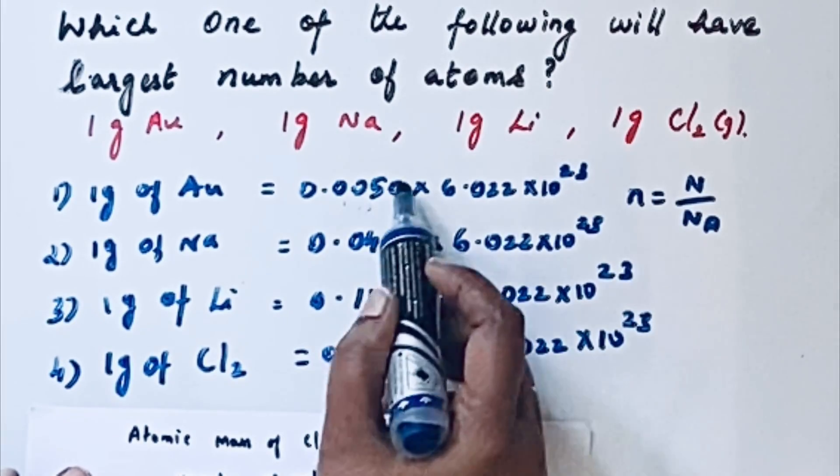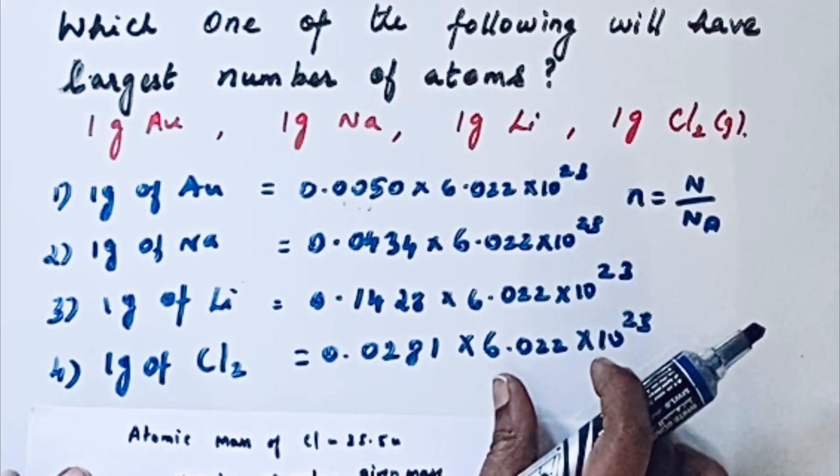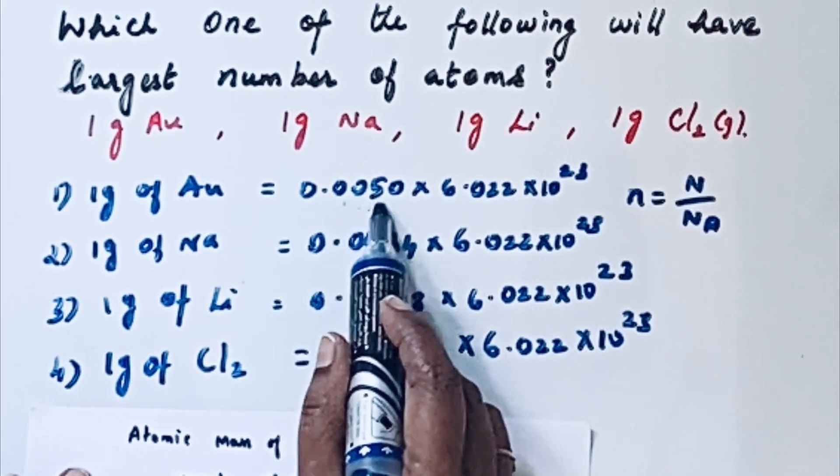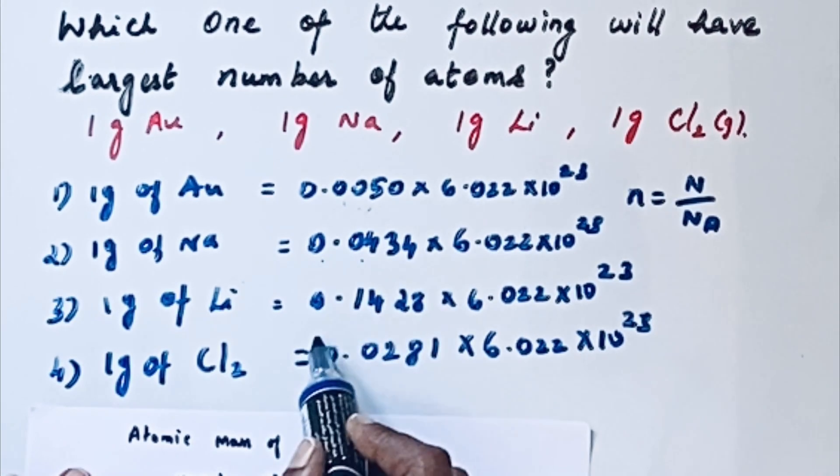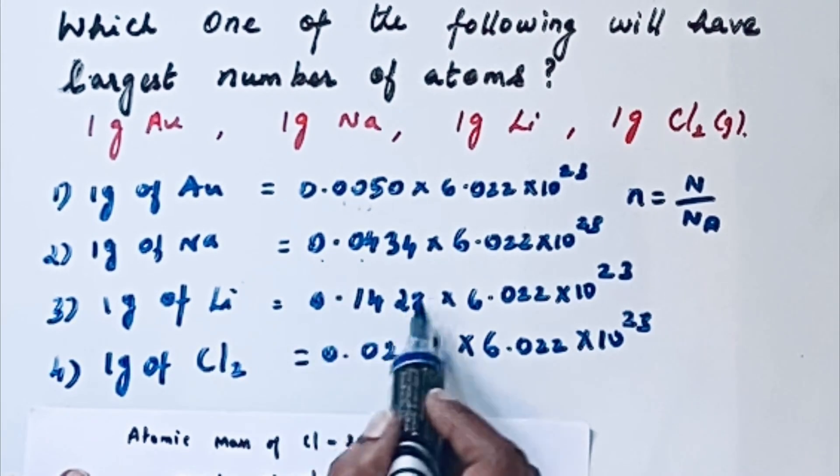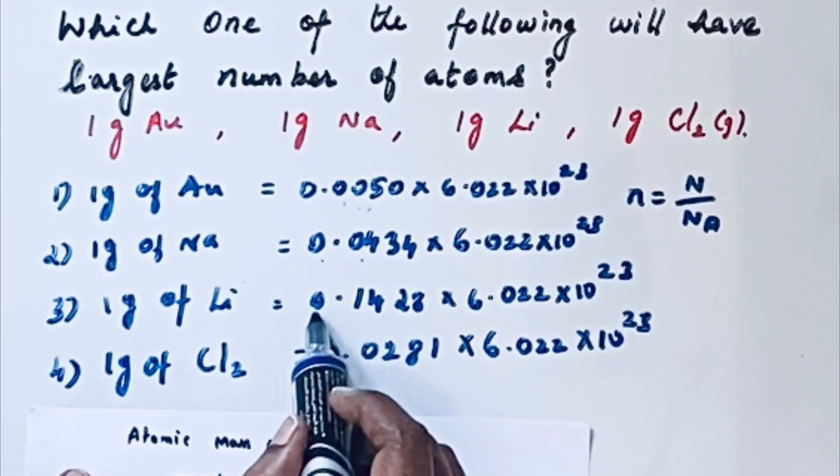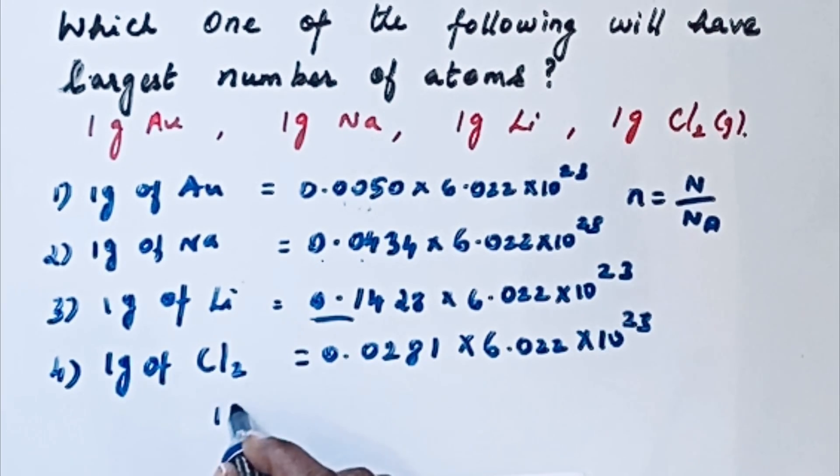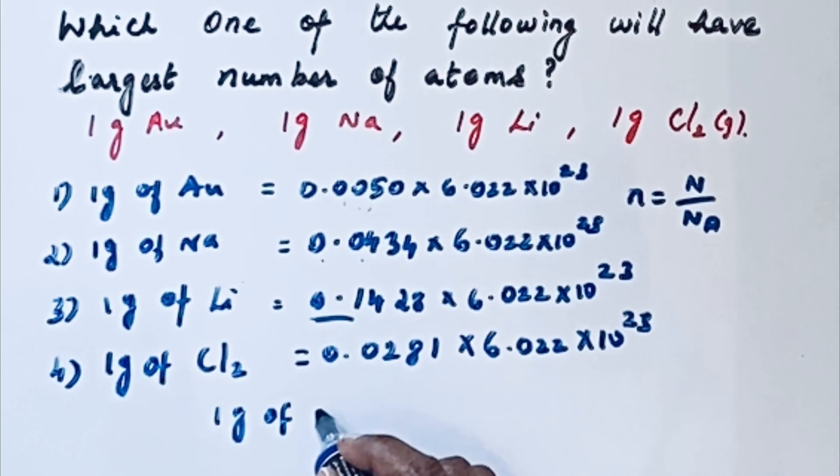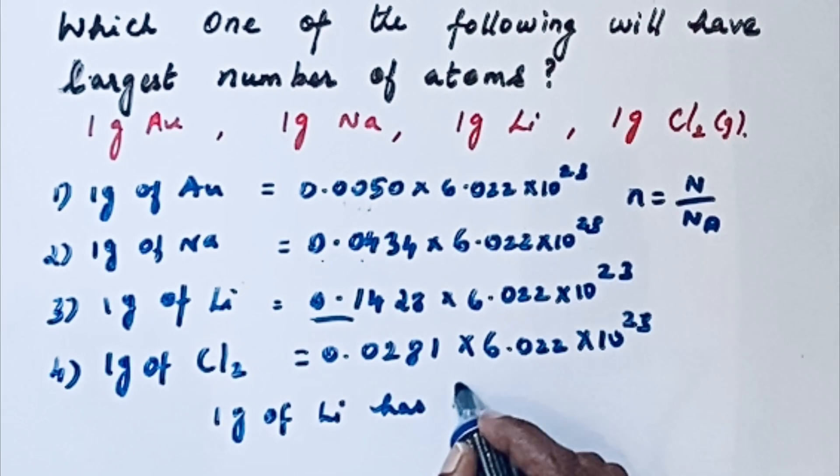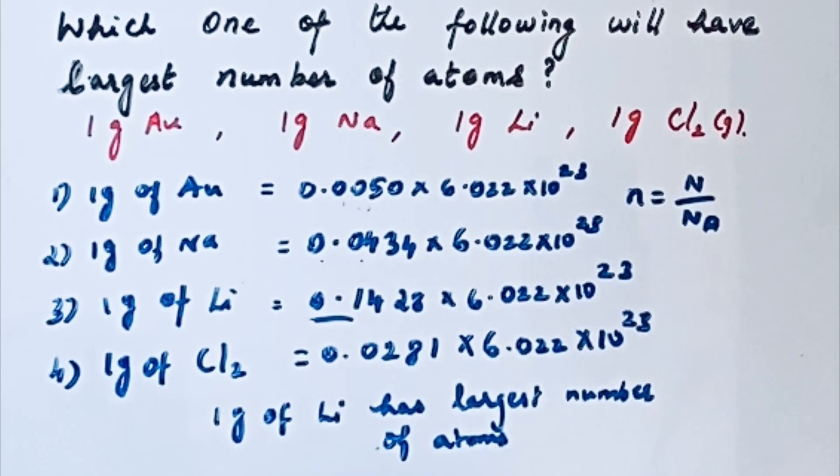Now look at this - the remaining on all sides is constant. So we can compare only this one: 0.0050, 0.0434, 0.1428, 0.0281. Which one is the greatest number? This is the greatest number. So 1 gram of lithium has the largest number of atoms. Thanks for watching.